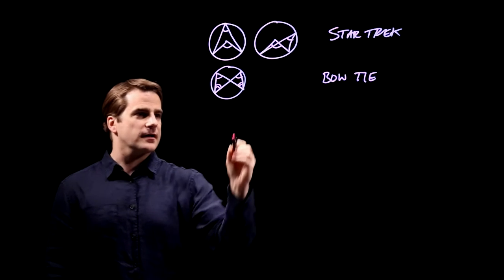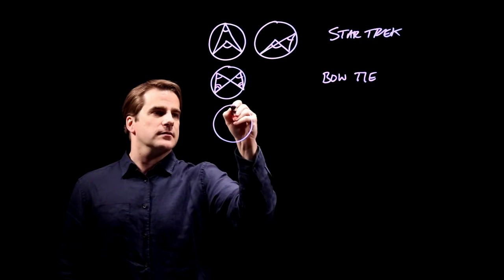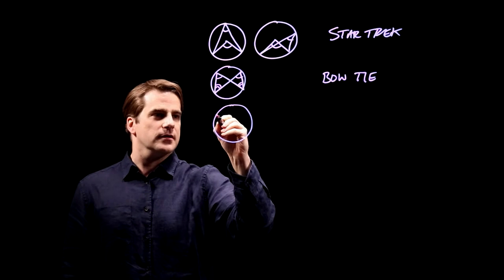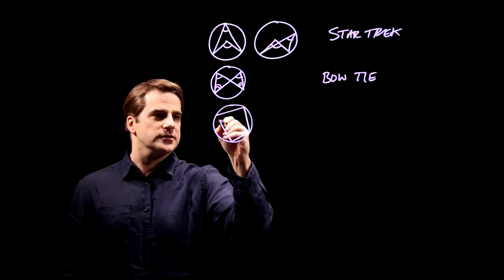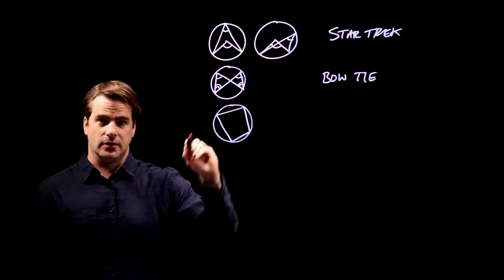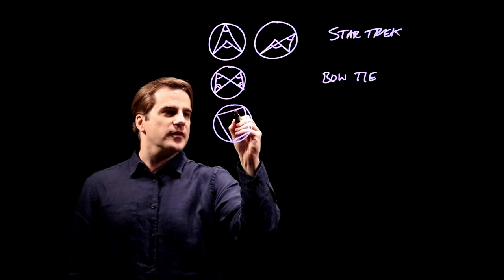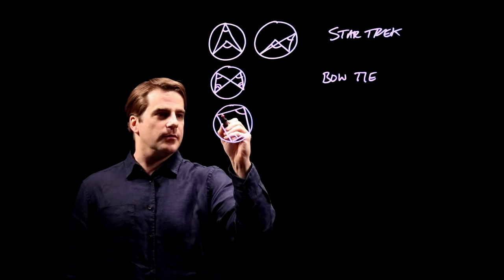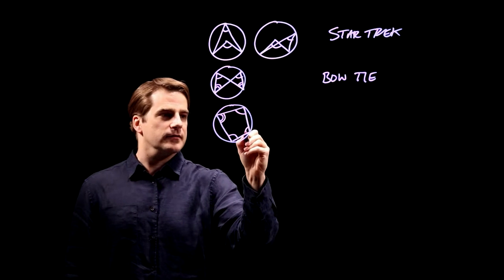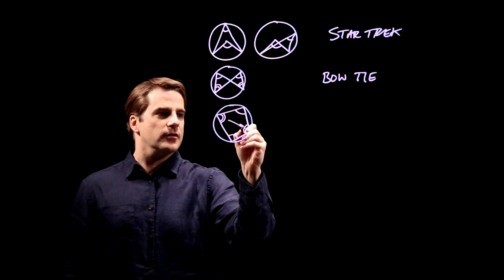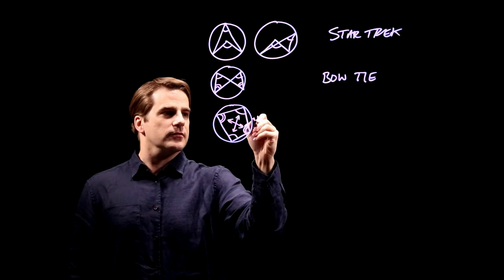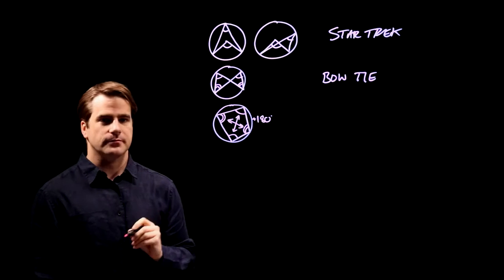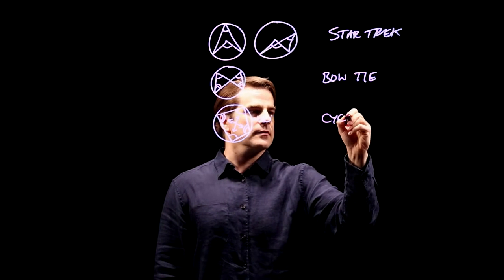Okay, next, Cyclic Quadrilateral. Any quadrilateral shape where all four points touching the circle. Opposite angles add up to 180. So opposites add up to 180 degrees. Cyclic Quadrilateral.